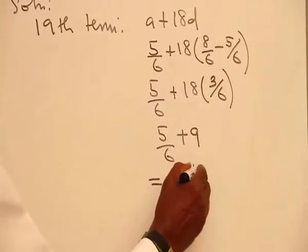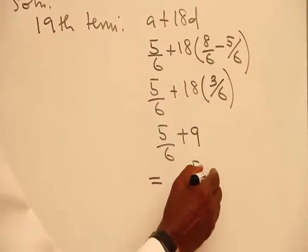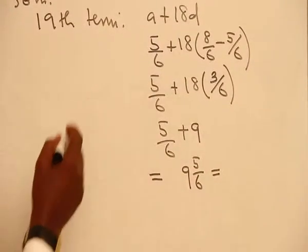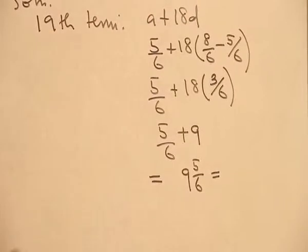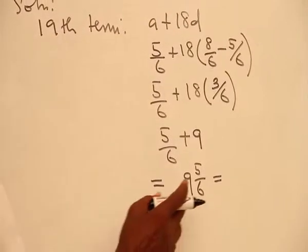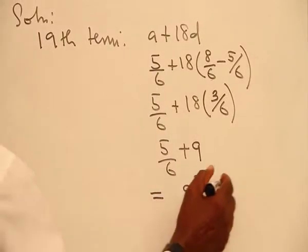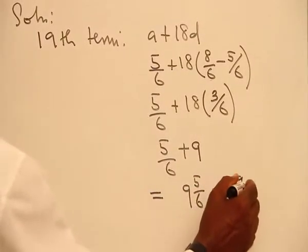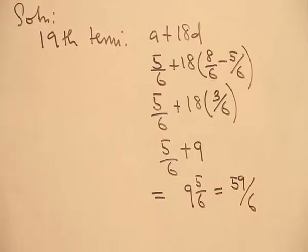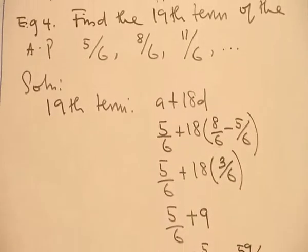And the final answer will be 9 and 5 all over 6, which, if we write it in the format that the AP was given to us, this becomes 54 plus 5 is 59 all over 6.